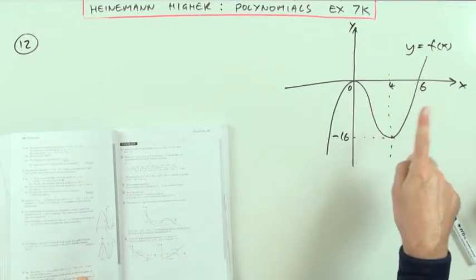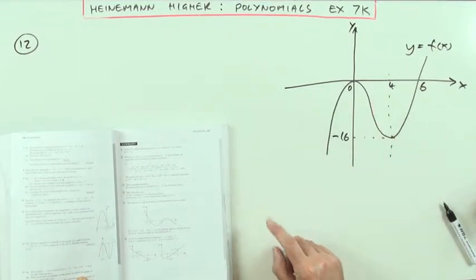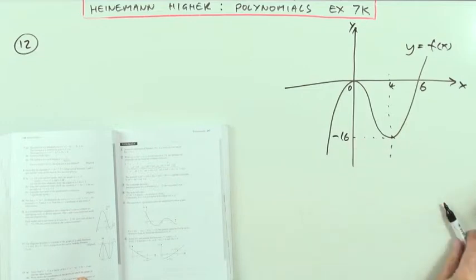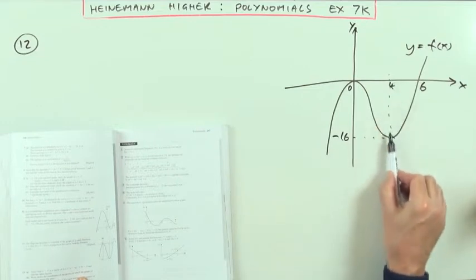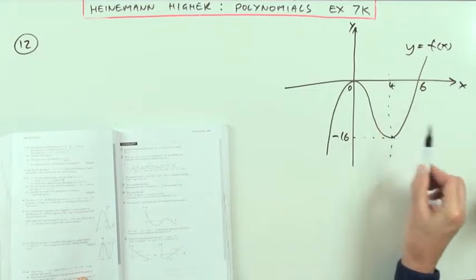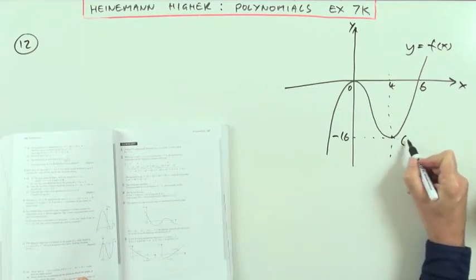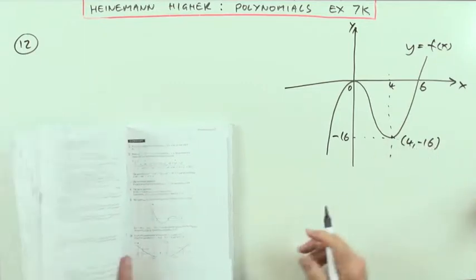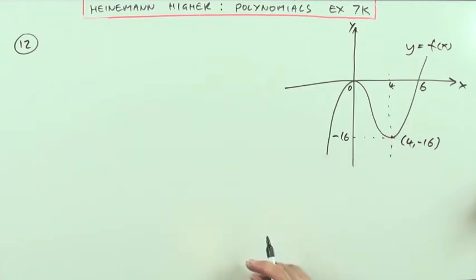There's a graph of a cubic function here, and it says y equals negative 16 as a tangent, and it shows the x-coordinate of the point where that tangent hits the curve. In other words, it's telling you that a point on the curve here is 4, negative 16. What's the equation of the curve?